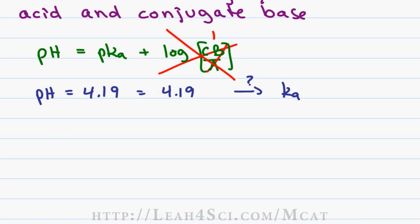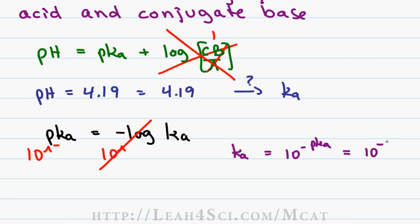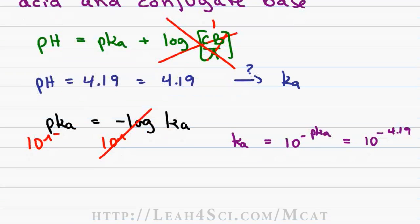Here's the equation we'll use. If pKa equals negative log of Ka, to solve for Ka we have to have 10 to the power of negative log to cancel out, and that means we need 10 to the power of negative pKa. So the Ka value equals 10 to the minus pKa, which equals 10 to the minus 4.19.